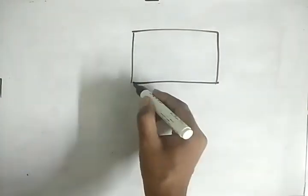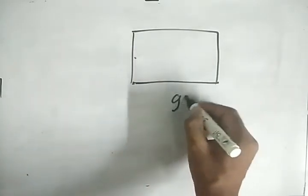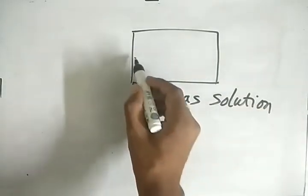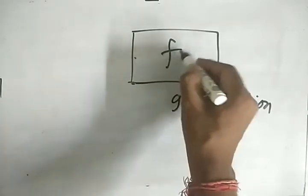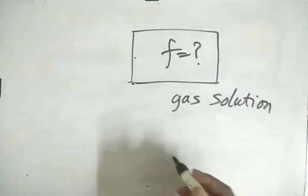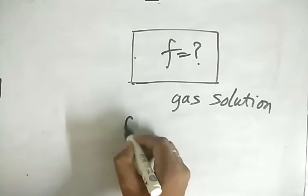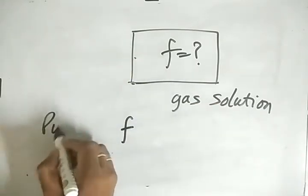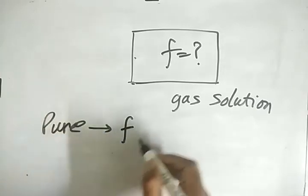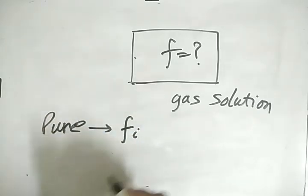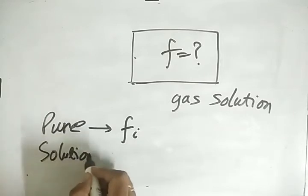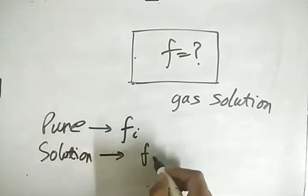Now we look at one more topic: fugacity in solutions. For a pure component we denote fugacity as fi, and the fugacity coefficient as phi-i, which equals fi over P. For a gas solution, we write the fugacity as fi-hat (fi cap).